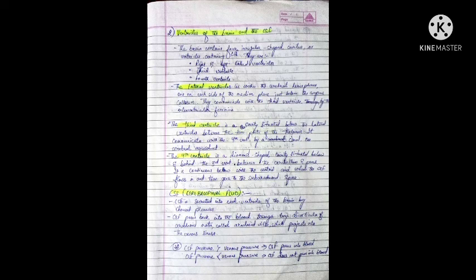The third ventricle is a cavity situated below the lateral ventricles. The fourth ventricle is a diamond-shaped cavity situated below and behind the third ventricle, between the cerebellum and the bones. So the four ventricles are: left lateral ventricle, right lateral ventricle, third ventricle, and fourth ventricle.